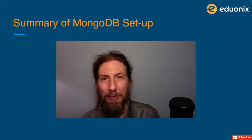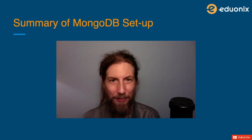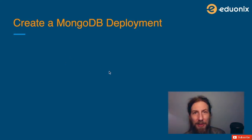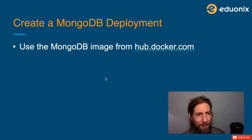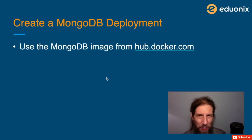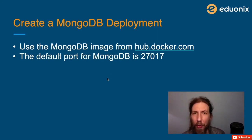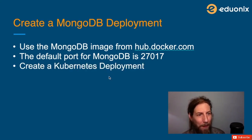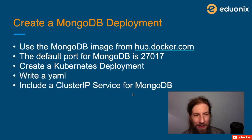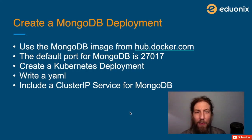Hello everyone, welcome back. We're going to take a look at the summary of our MongoDB setup. First, we had to create a Mongo database deployment using the MongoDB image from hub.docker.com — it's a standard image. The default port for MongoDB is 27017, as listed on the hub.docker.com page. We created a Kubernetes deployment YAML, put a divider in, and created a second object for a cluster IP service for our Mongo deployment.